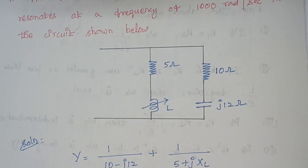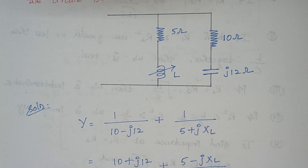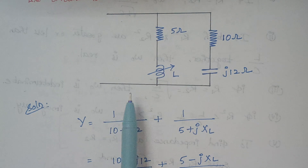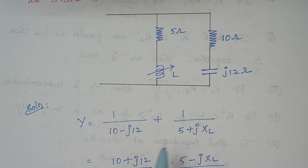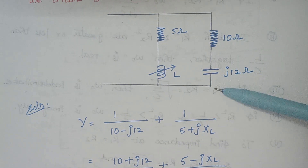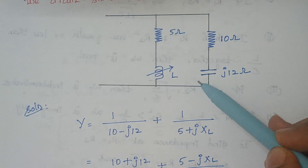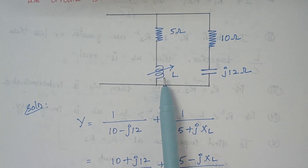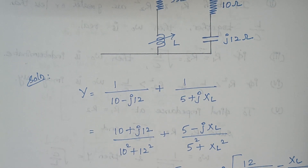We proceed with the admittance. The total admittance of the given circuit is Y = 1/Z, which is 1/Z1 plus 1/Z2. Z1 is the first branch: 10 minus j12, since we have a capacitor. Z2 is 5 plus jXL, since we have an inductor. Next, we take the complex conjugate of each term.